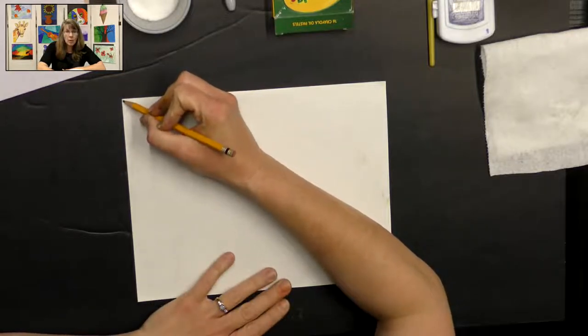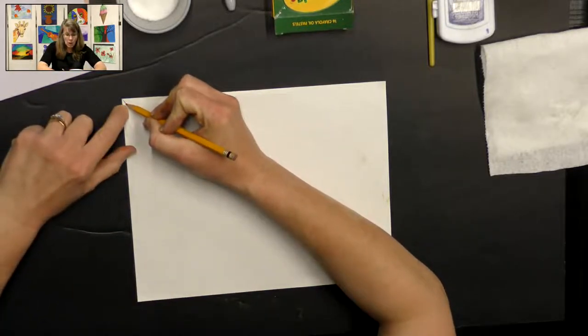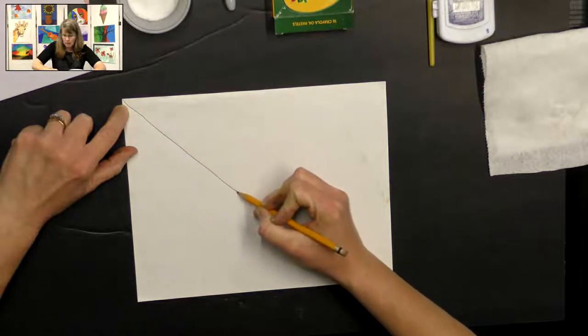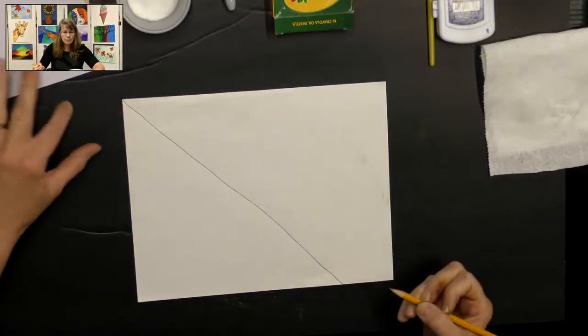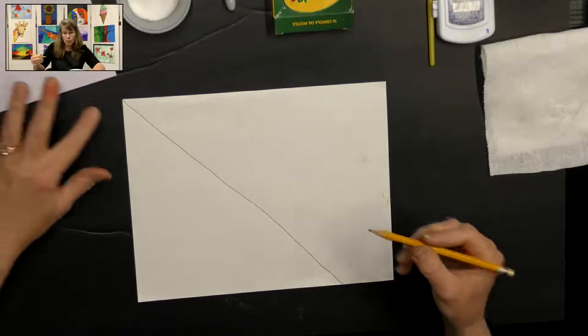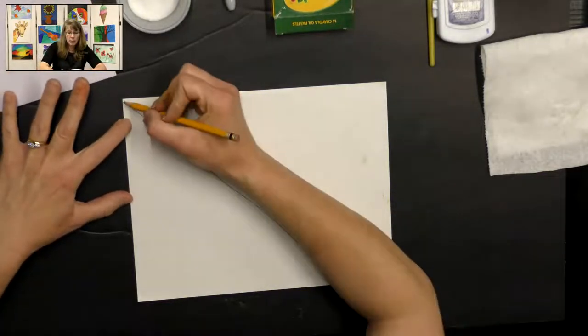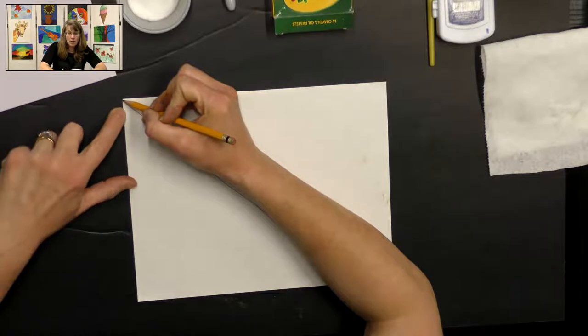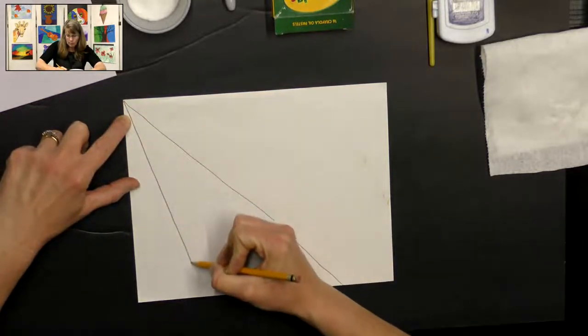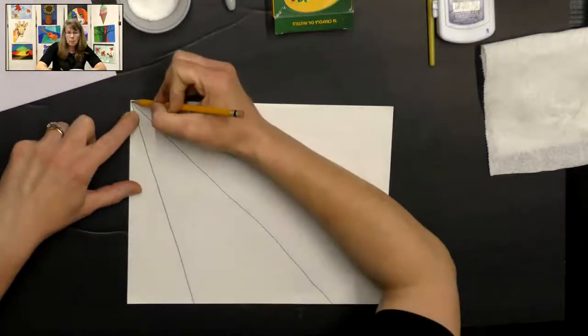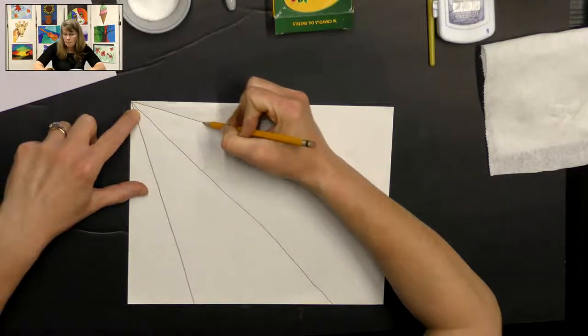We're going to start at the upper corner of our paper and draw a line and just go diagonally and just go off the edge of your paper on the other side. It doesn't have to be to the corner, just diagonal. And we're going to start every line up here in this corner. So I'm going to draw one more that kind of goes down towards the bottom and one more that'll go this way off my paper.